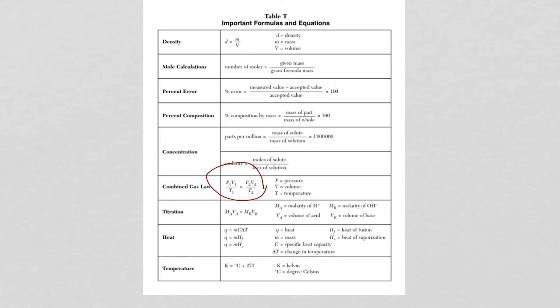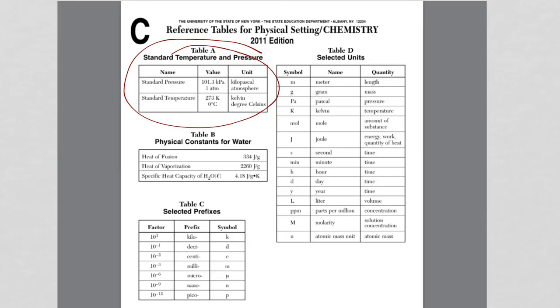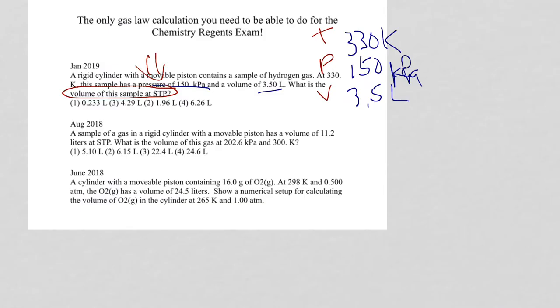Whatever unit you start with for pressure, you end with. Whatever unit you start with for volume, you end with. Temperature, however, no matter what, if you're given Celsius, it has to be in Kelvin. For this question, first thing I always recommend, even with multiple choice, is to write down the equation.